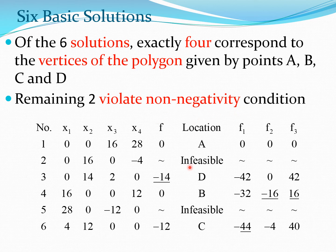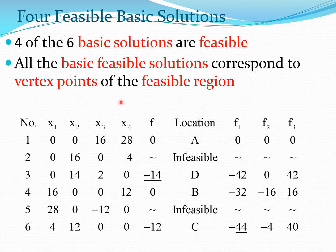Specifically, solution number two where X4 equals minus 4, and solution number five where X3 equals minus 12, are discarded. Four of the six basic solutions are feasible, and all basic feasible solutions correspond to vertex points of the feasible region. This fact is extremely important in linear programming.